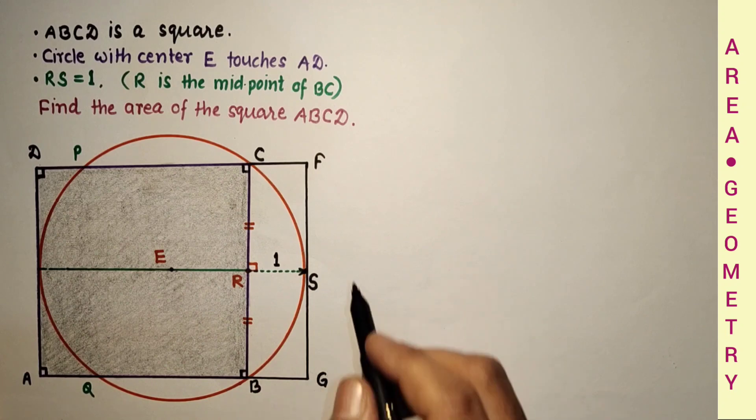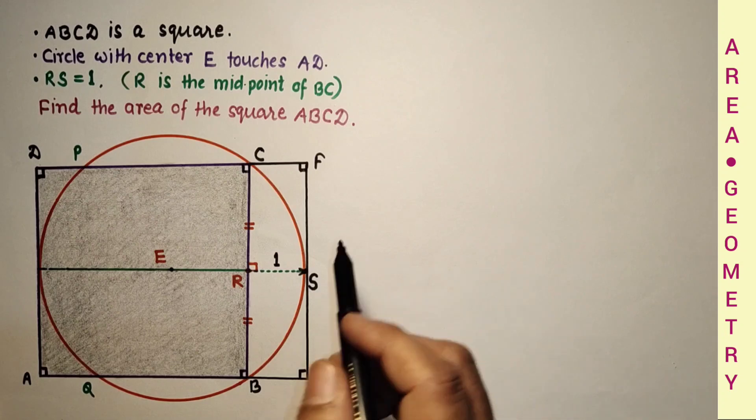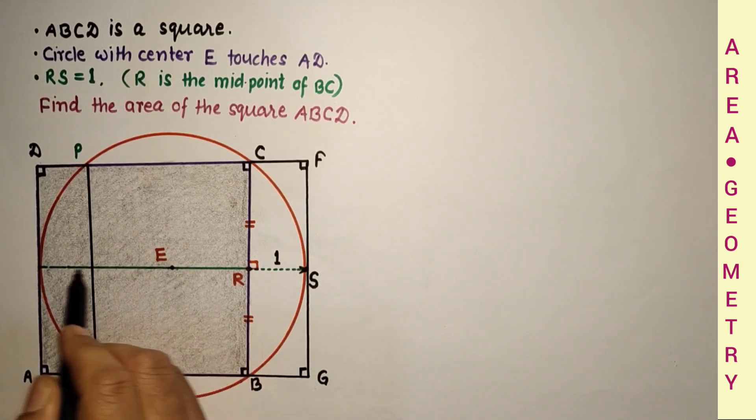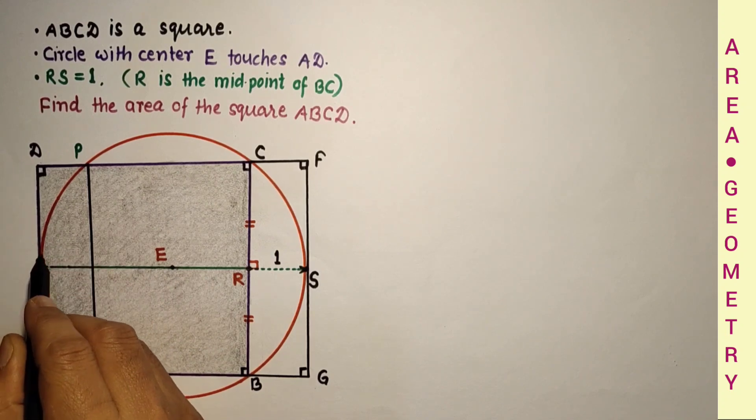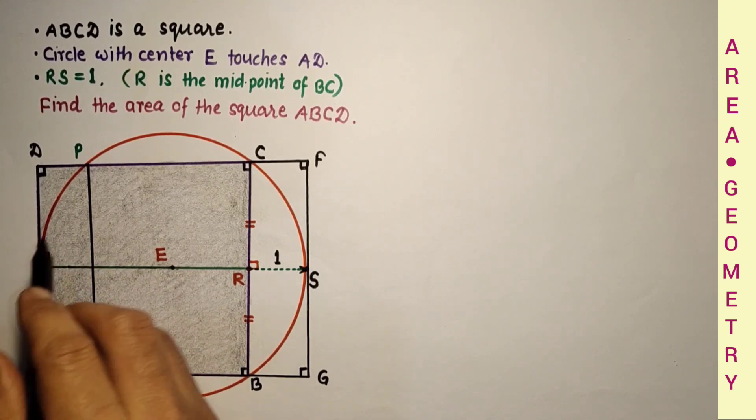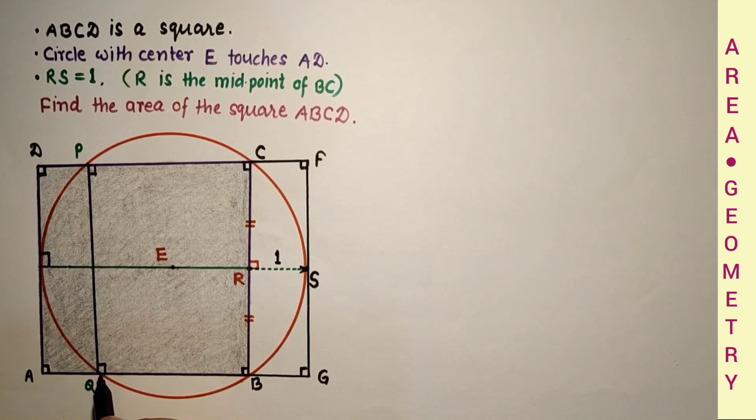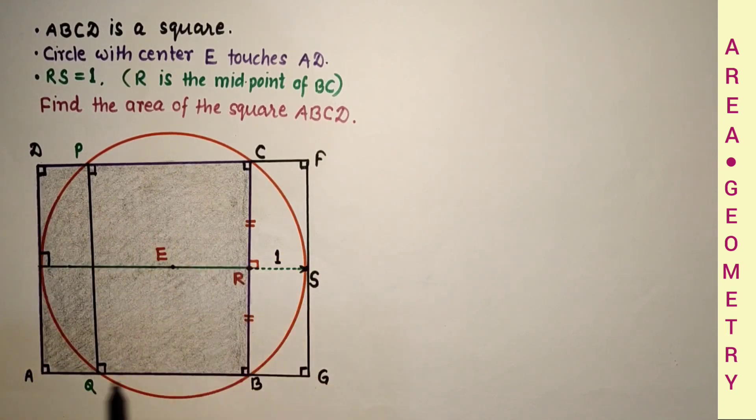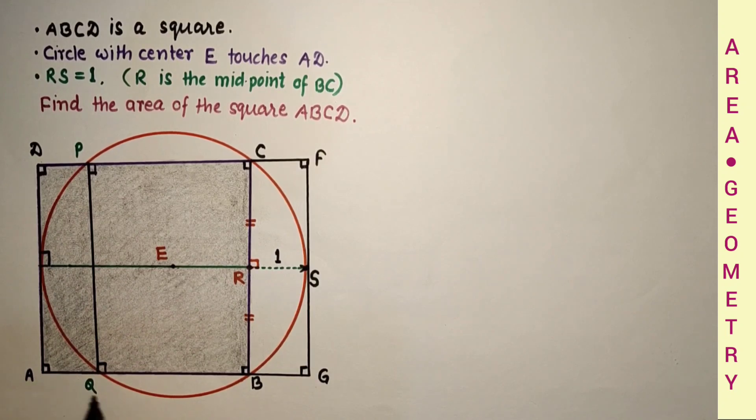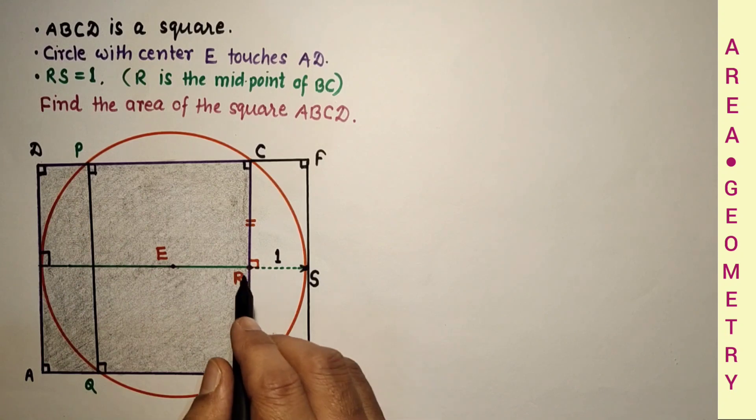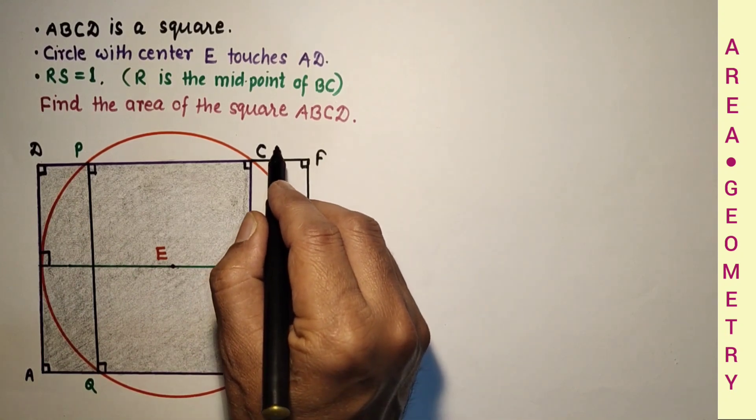CF is equal to BG. This is 90 degrees and this is 90 degrees. So if we join PQ as radius and tangent at the point of contact will be perpendicular. The diagram is not to scale. This is a square and this is also a square. This RS is 1, so this is also 1.